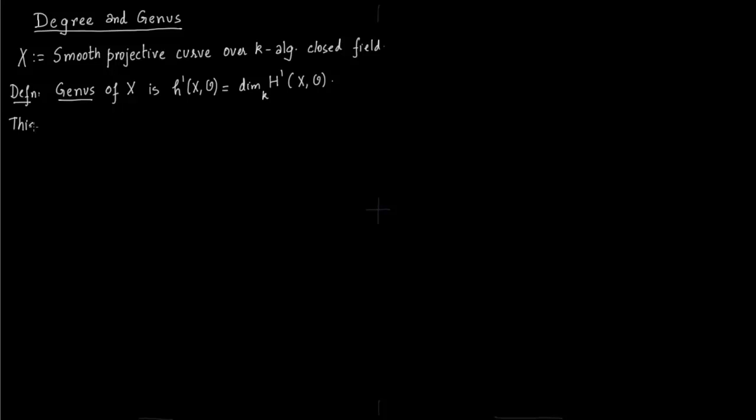Now this makes sense because this group h¹(X,O_X) is a finite dimensional k vector space. This is again given on page 122 of Daniel Perrin's book.